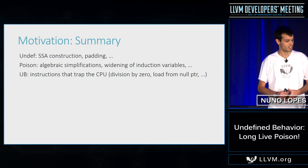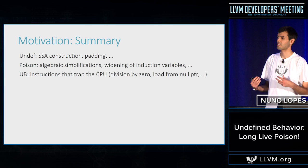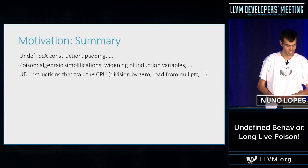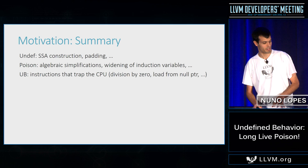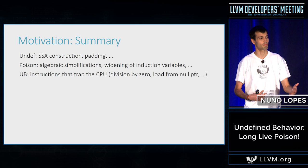To summarize: poison and undef have very good reasons to exist. Undef was for SSA construction and padding. Poison is needed for even simple algebraic simplifications, like widening induction variables. Undefined behavior is only for instructions that trap the CPU — like division by zero or loading from null pointers — because those are very hard to move past control flow.